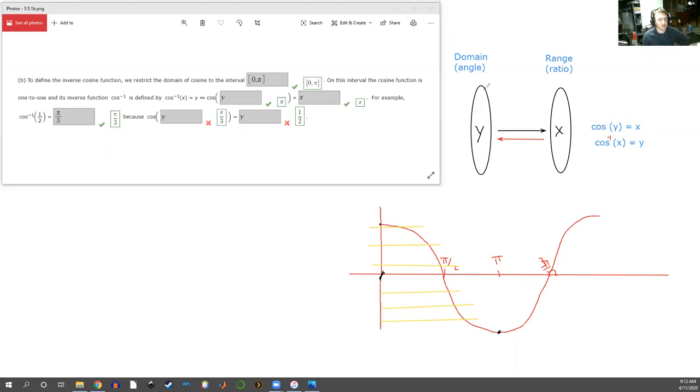The original function cosine takes an angle, gives us a ratio. The inverse function takes a ratio and tells us the angle. This is all about input and output. So right here they tell us that cosine inverse of x is y, so I've got that written here, and that means...